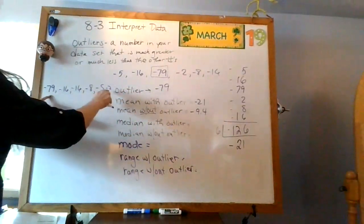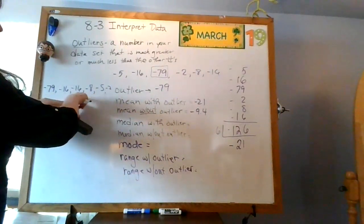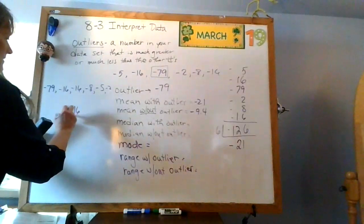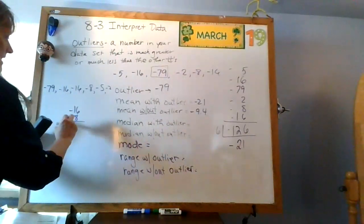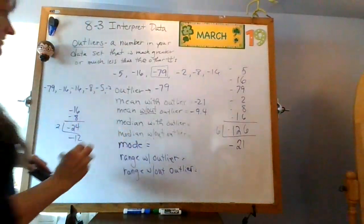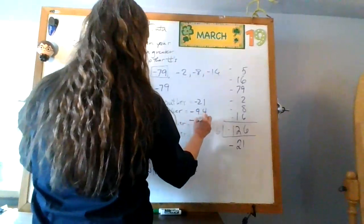All right, let's count from the middle. 1, 2, 3. So it's going to be between negative 16 and negative 8. I'm going to add those together, which is negative 24. Divide it by 2, negative 12. All right, so the median with the outlier is negative 12.